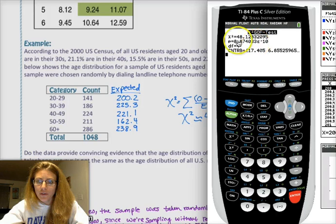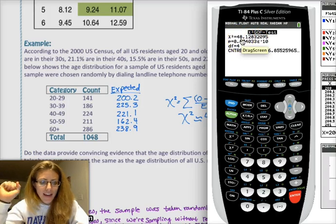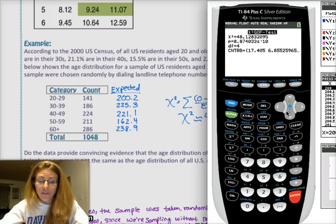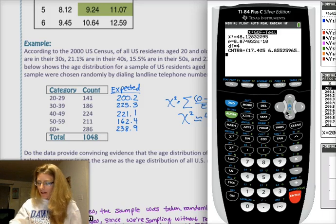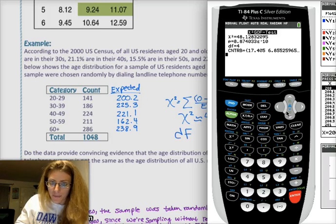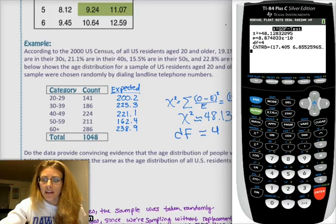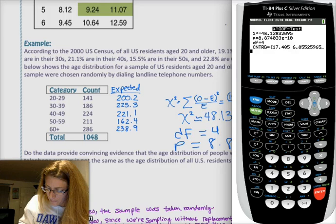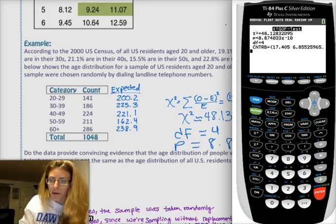And this one actually gives you your chi-squared, 48.12. Same thing, so we did that right. But our p-value is 8.8 times 10 to the negative 10. That is a very, very small p-value. So then you have everything right there.